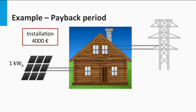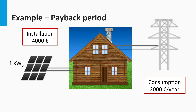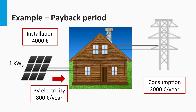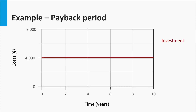We can understand this idea in a simple example. Let's say family Smith has installed a PV system of 1 kW peak at an initial investment cost of €4,000. The family's usual electricity consumption is such that on an average it incurs an electricity bill of €2,000 per year. After installation of the PV system, roughly €800 worth of electricity consumed by the family is provided for by the PV system. In this graph we see a straight line denoting the fixed investment costs in the beginning. As the family consumes more of the clean power produced by the PV system, it offsets the electricity bill accordingly. The amount saved is €800 per year; in other words, the family earns a return of €800 per year on the PV investment.